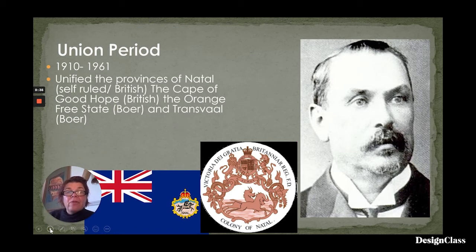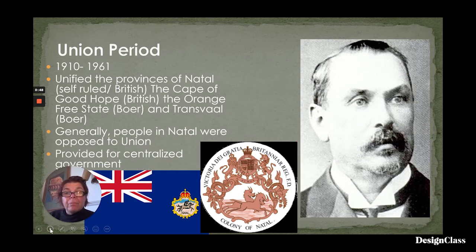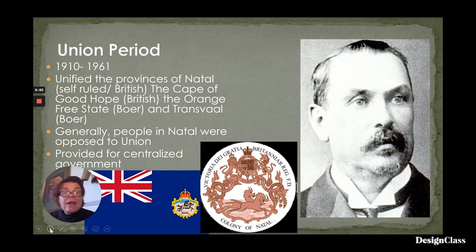It unified the provinces of Natal, which was self-ruled under the British; the Cape of Good Hope under the British; the Orange Free State, which was a Dutch Boer colony; and the Transvaal, which was also a Dutch Boer colony. Generally, the people in Natal were opposed to Union — they didn't want to get into bed with all of these other disparate parties.